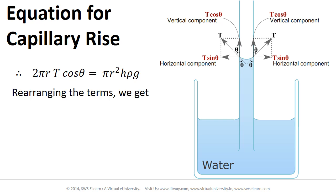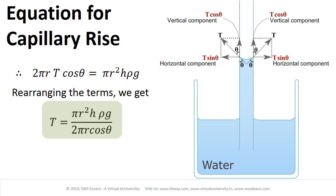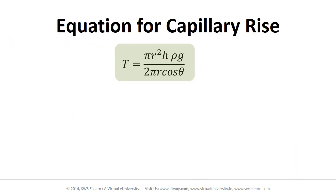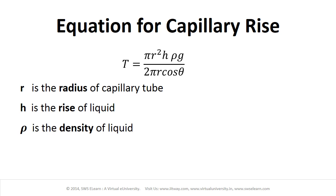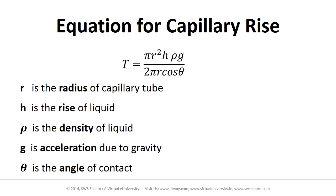Rearranging the terms, we get T equal to πR² H ρ G divided by 2πR cosθ. In this equation, R is the radius of the capillary tube, H is the rise of liquid, ρ is the density of liquid, G is the acceleration due to gravity, and θ is the angle of contact.